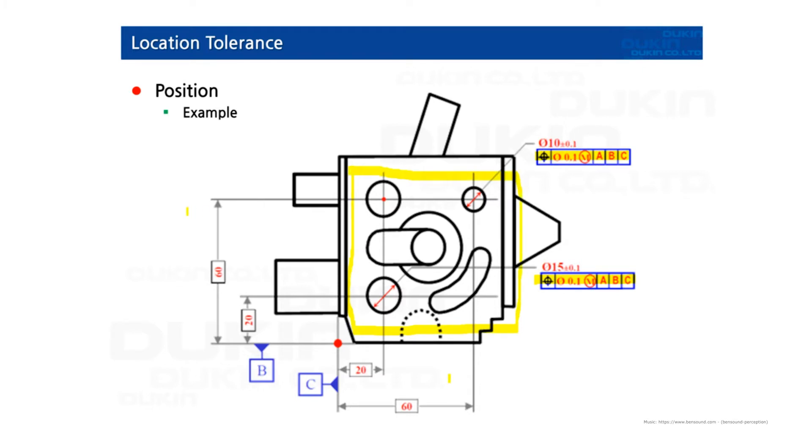So according to datum ABC, here the center of the true position from the datum reference frame. And as you can see now the red circle which is the actual circle's center. And let's take a look at the orange circles detail on the next slide.